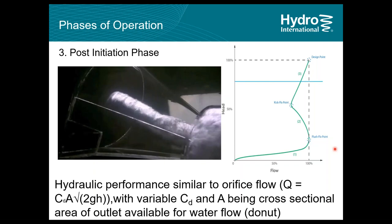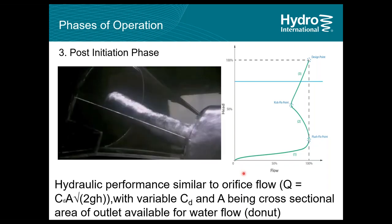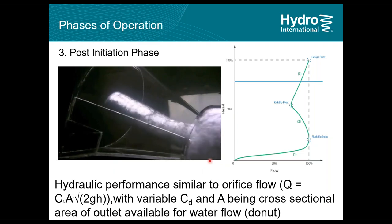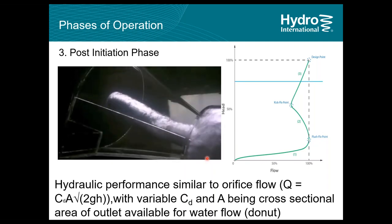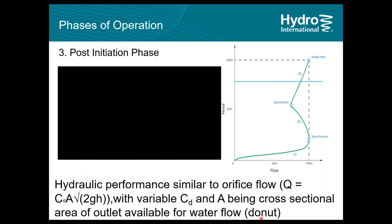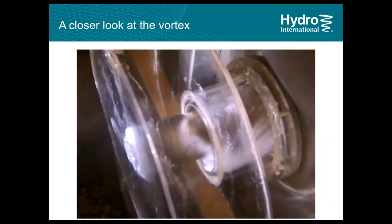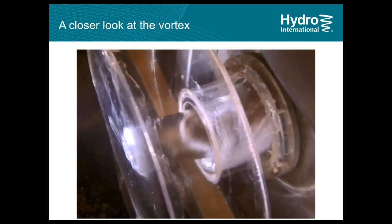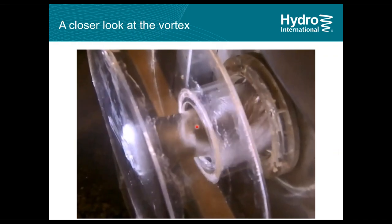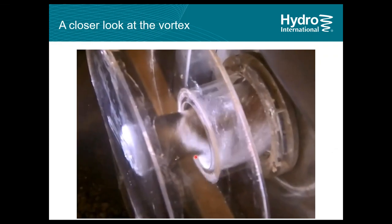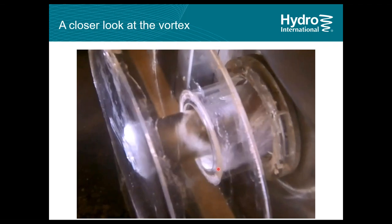In the high flow or post-initiation phase, the vortex is fully formed and the flow is restricted to a predetermined level. The unit is now acting as a significantly smaller orifice than the physical size of the outlet. This is achieved by an air core formed inside the unit, which takes away some area of the outlet, leaving limited room for water to pass through — effectively reducing the size of the outlet. You can clearly see the air core restricting outflow in the perspex unit.